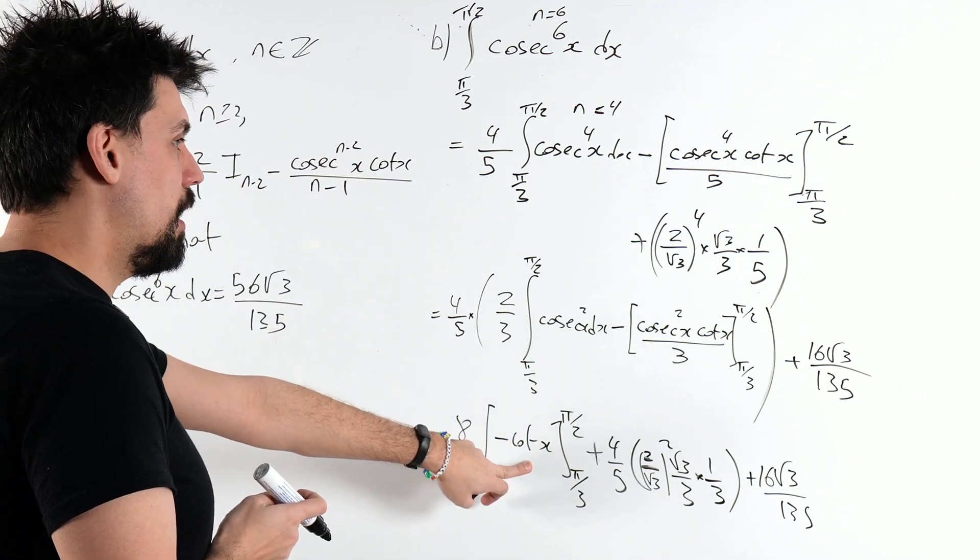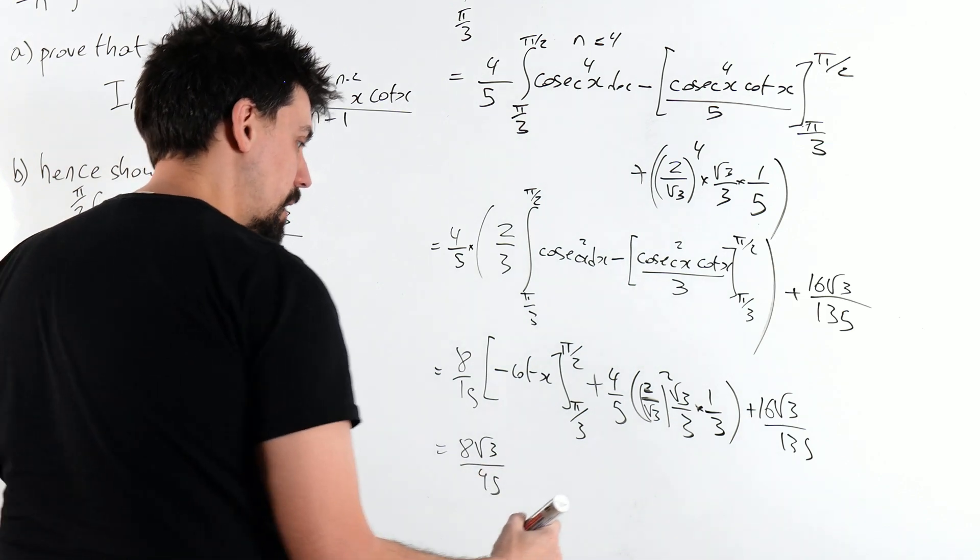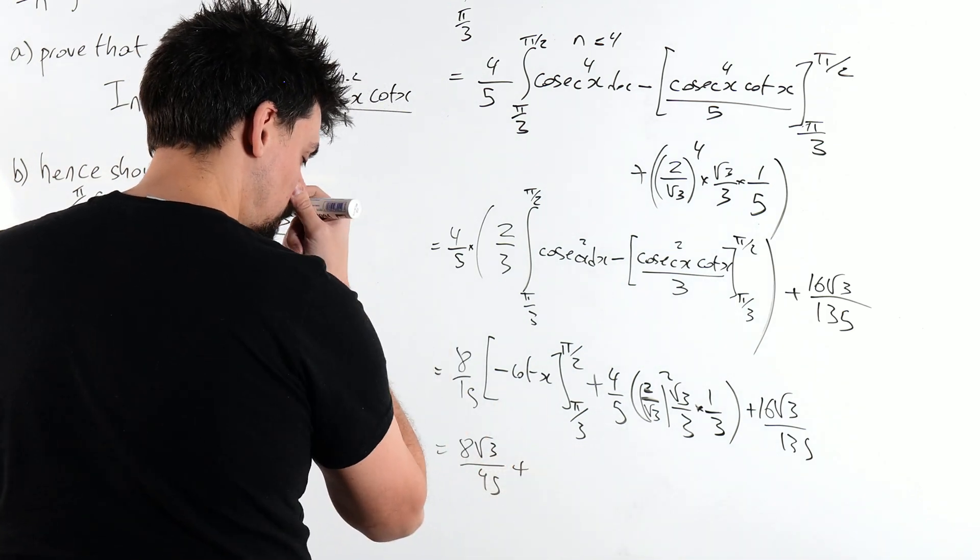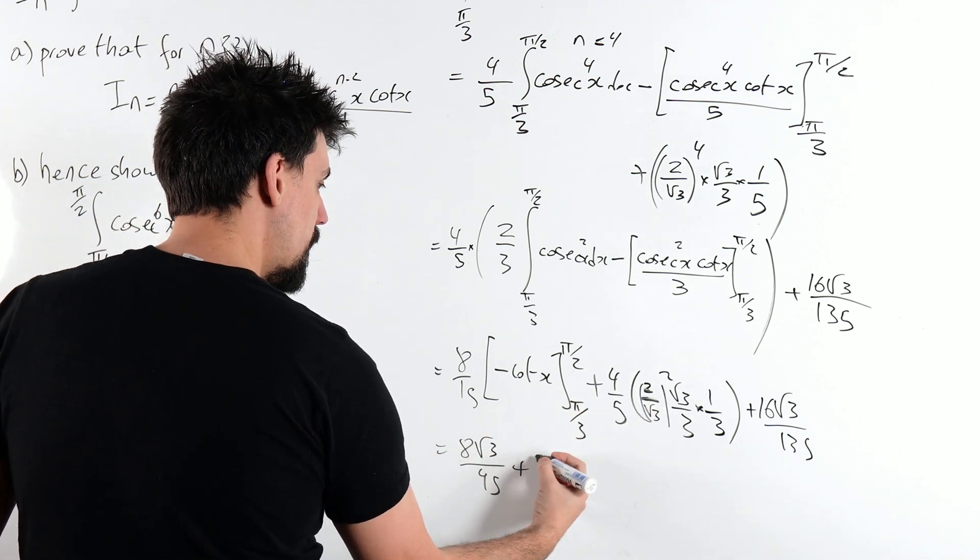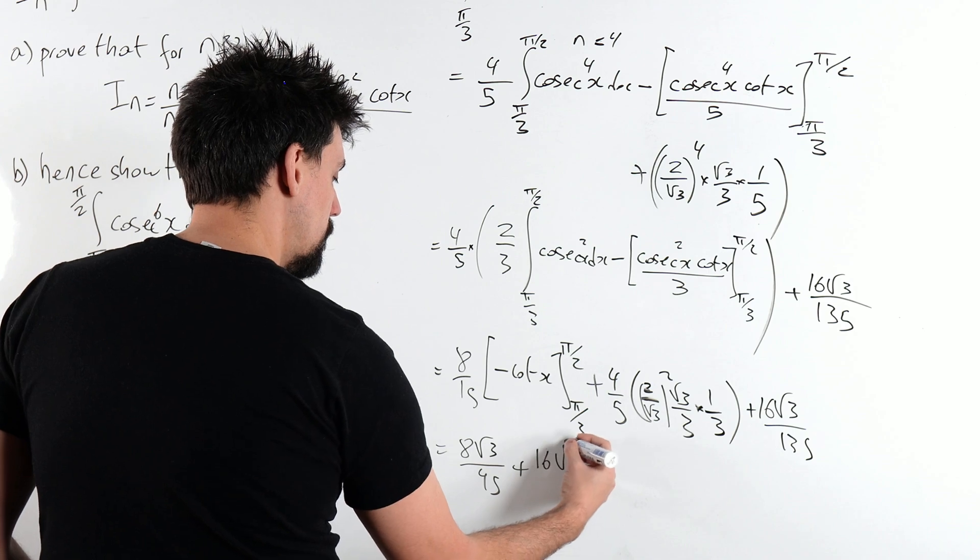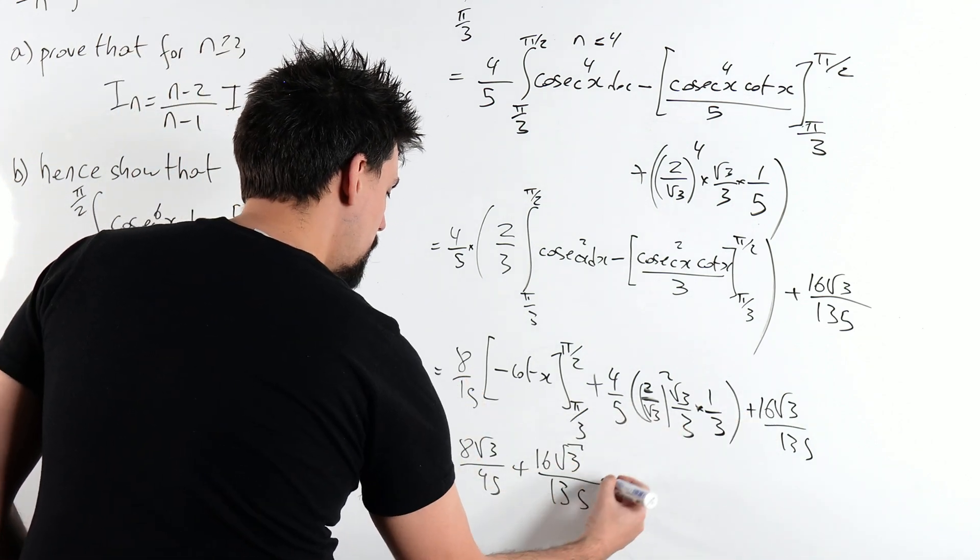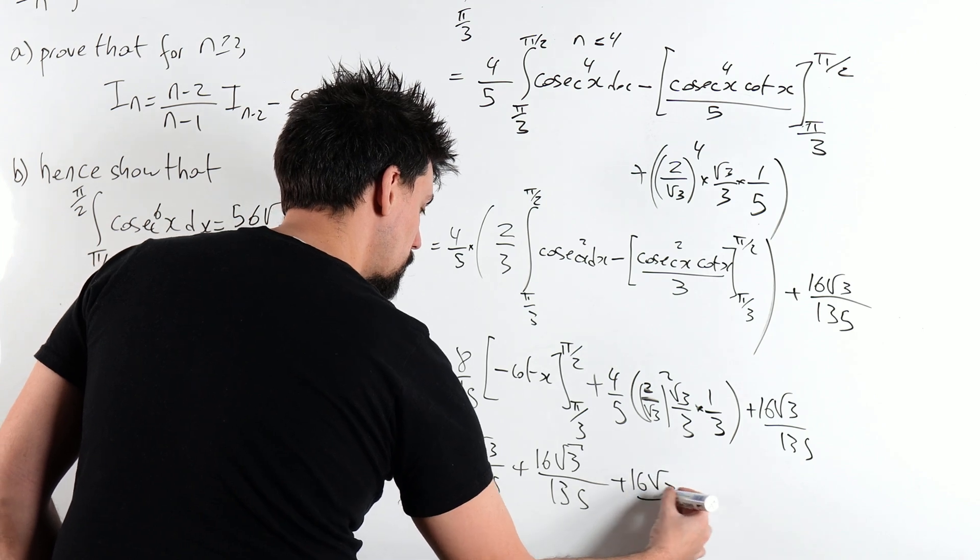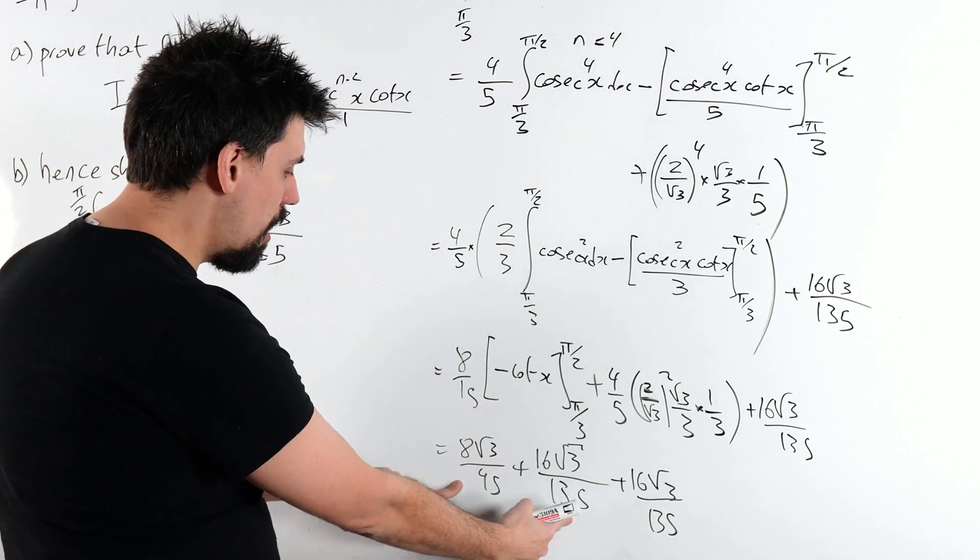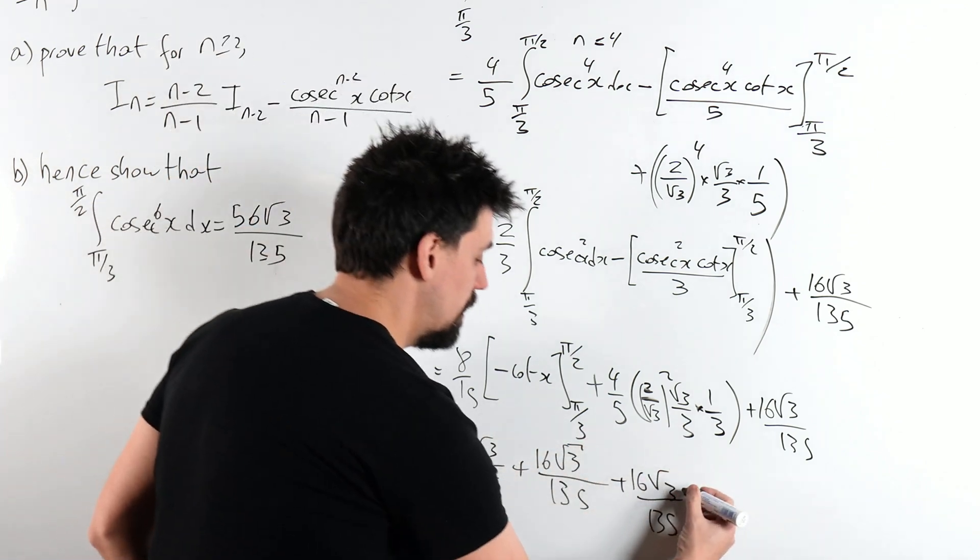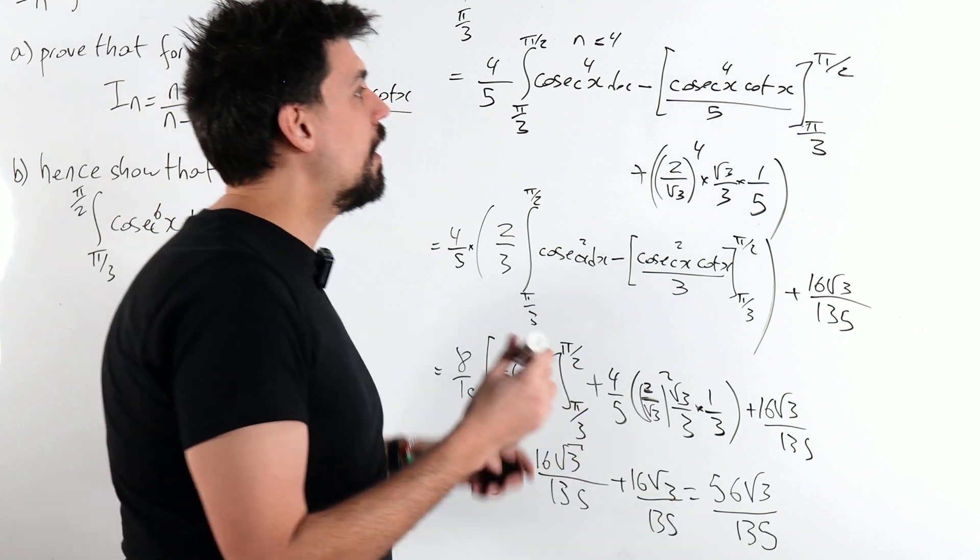Okay. What do we say cot of pi over 3 was root 3 over 3. So that is 8 root 3 over 45 plus 2 squared is 4 plus 16. Ooh, another 16. Root 3 over 5 times 27 is 135. I think we're onto something. 45 goes into 135 3 times. So it's 24 plus 16 is 40 plus 16 is in fact 56 root 3 over 135.